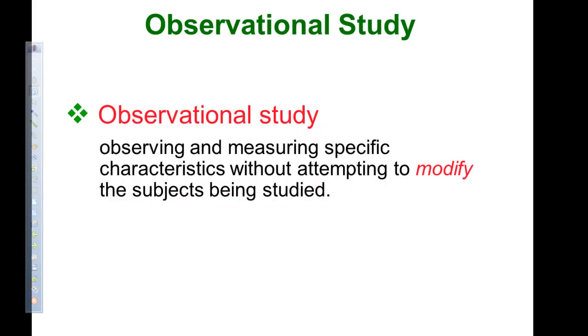The data generally comes from one of two sources, either an observational study or an experiment. We've mentioned experiment already, but we haven't used the term observational study. With an observational study, it's observing and measuring specific characteristics without attempting to modify the subjects being studied. We don't touch it, we just look.